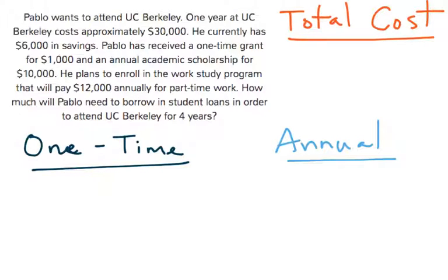In this set of questions, we're going to look at the cost of college. We're going to calculate how much college costs over a set amount of years. We're also going to look at the different ways to pay for college, including savings, student loans, and scholarships, and how those things affect the total amount of money you have to pay. So let's read this question and then break it down.